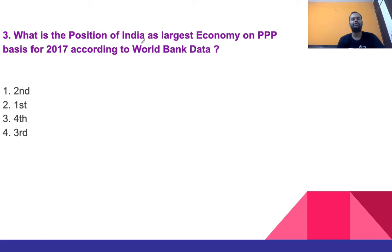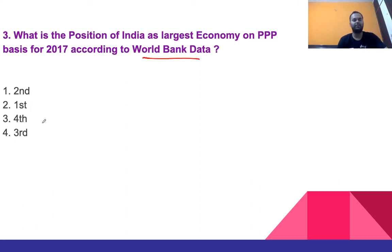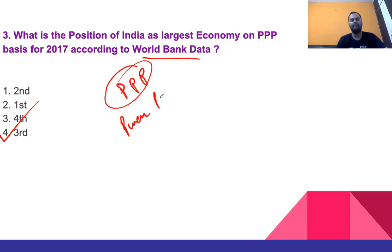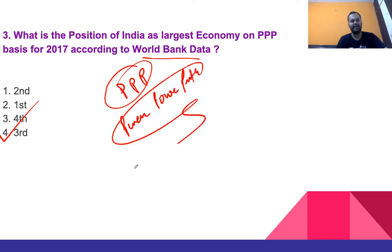Question 3: What is the position of India as the largest economy on PPP basis for 2017, according to World Bank data? Options: second, first, fourth, or third. The right answer is third. PPP kya hota hai? That is Purchasing Power Parity. On that basis, India ranks third in the world. Also remember the World Bank headquarters location.